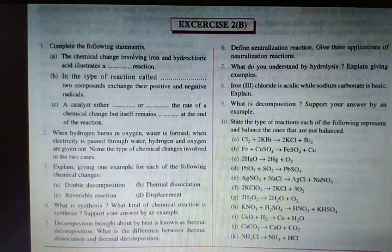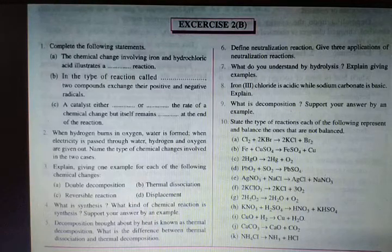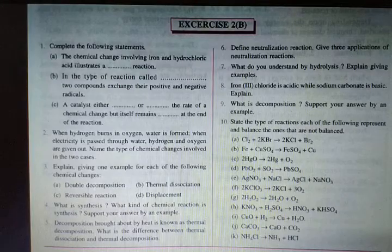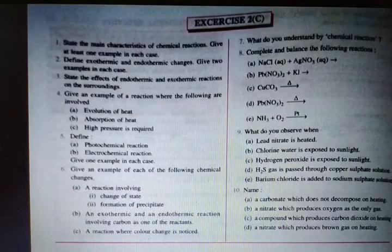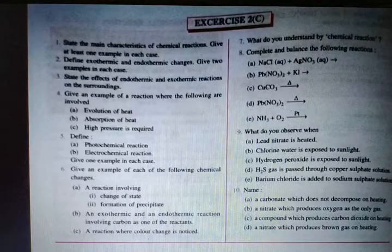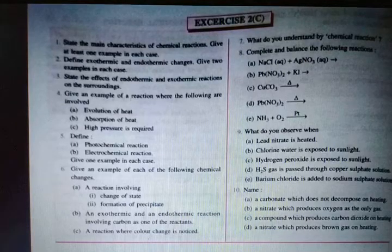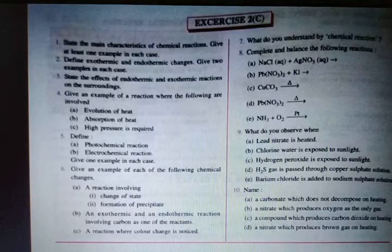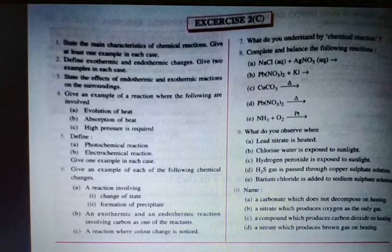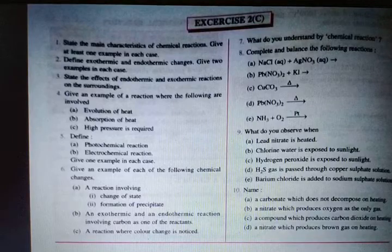Moving on to Exercise 2C — the final exercise. First question: state the main characteristics of a chemical reaction. There are four: (1) evolution of gas, (2) formation of a precipitate, (3) change of color, (4) evolution of heat or energy. These are the four characteristics given in your book. At least one example should be given for each characteristic.